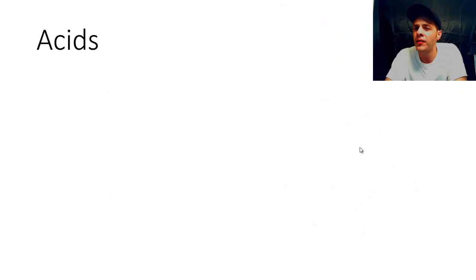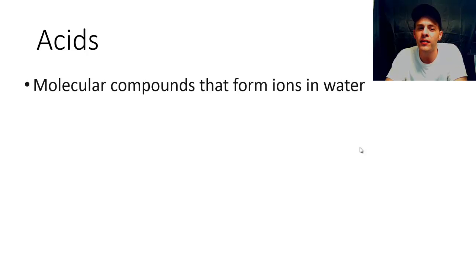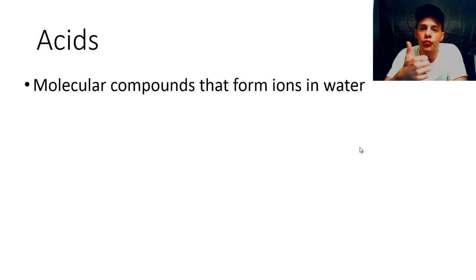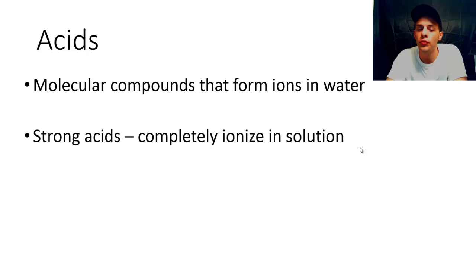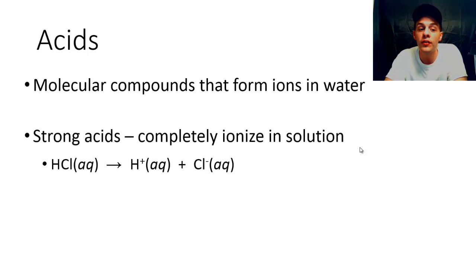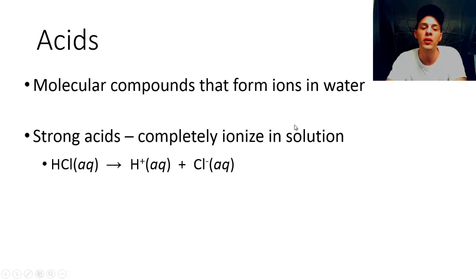We're going to talk about acids in much more detail later on, but for now all we need to know is that acids are molecular compounds yet they form ions when you put them in water. There are two types of acids: strong acids and weak acids. A strong acid is an acid that completely ionizes in solution, and a good example of a strong acid would be hydrochloric acid, or HCl.